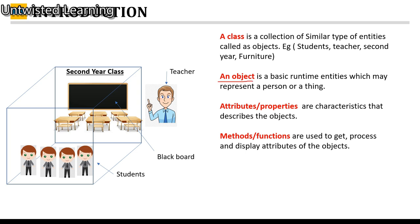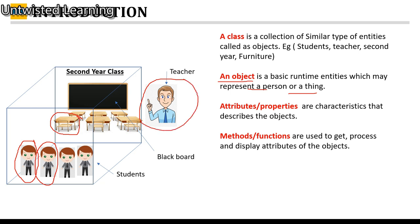An object is a basic runtime entity which may represent a person or thing. Student one can be called object one of class student, student two can be object two of class student. A table or chair can be an object of class furniture, and a teacher can be an object of class employee or staff. So the two terms class and object are clear.